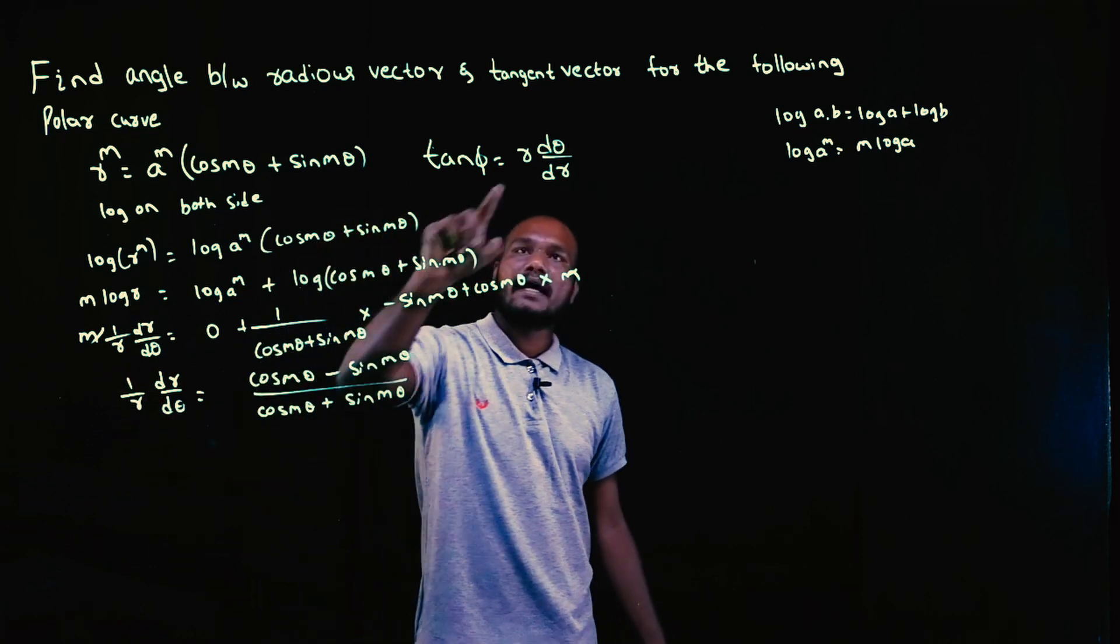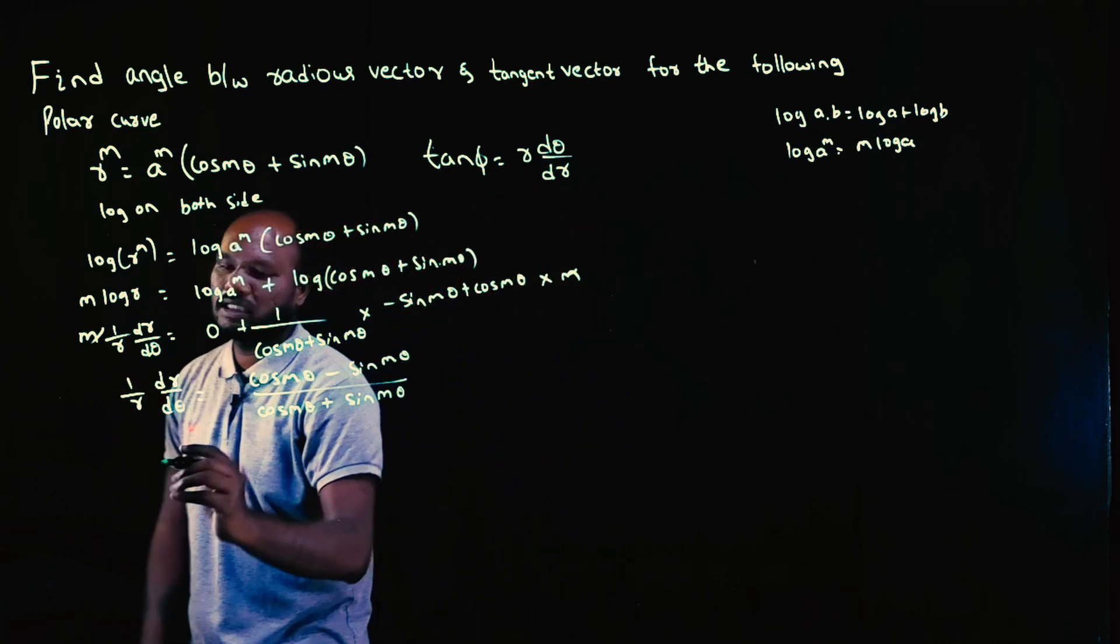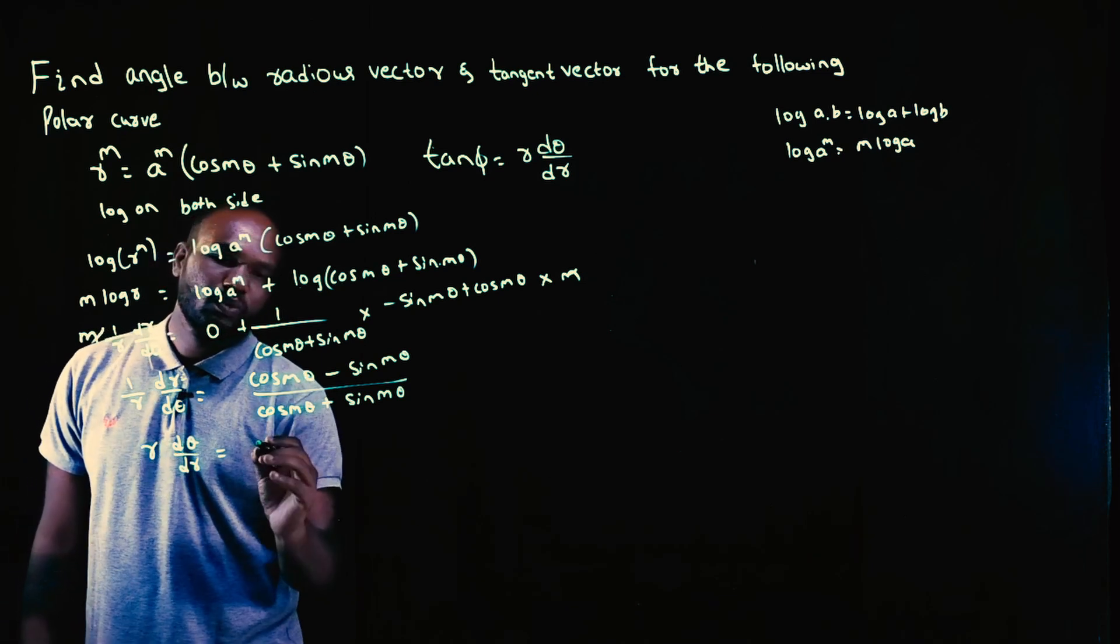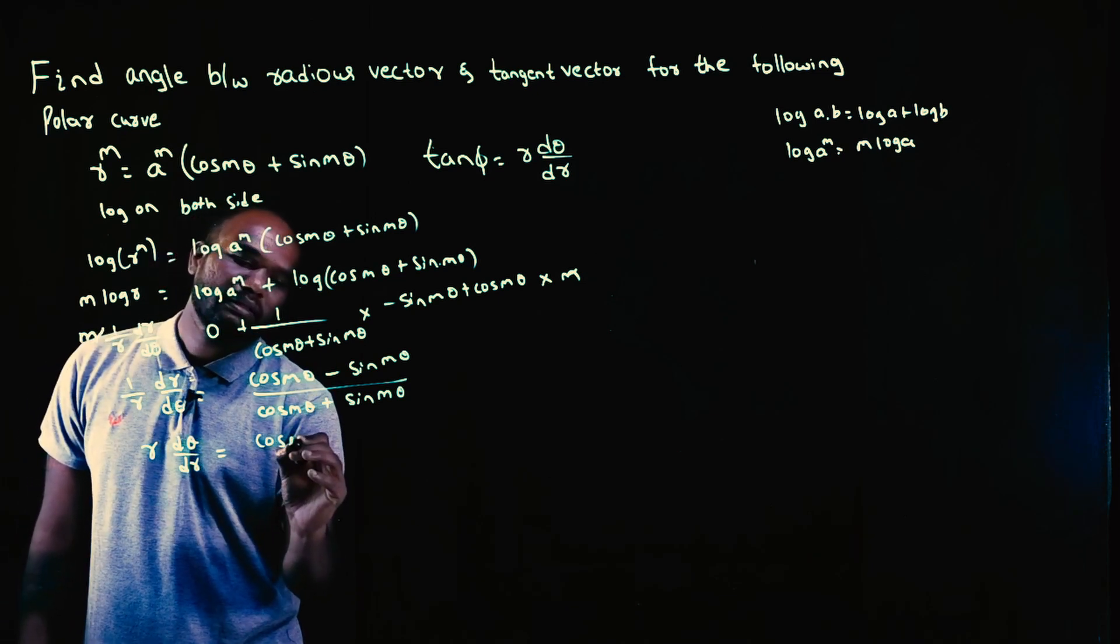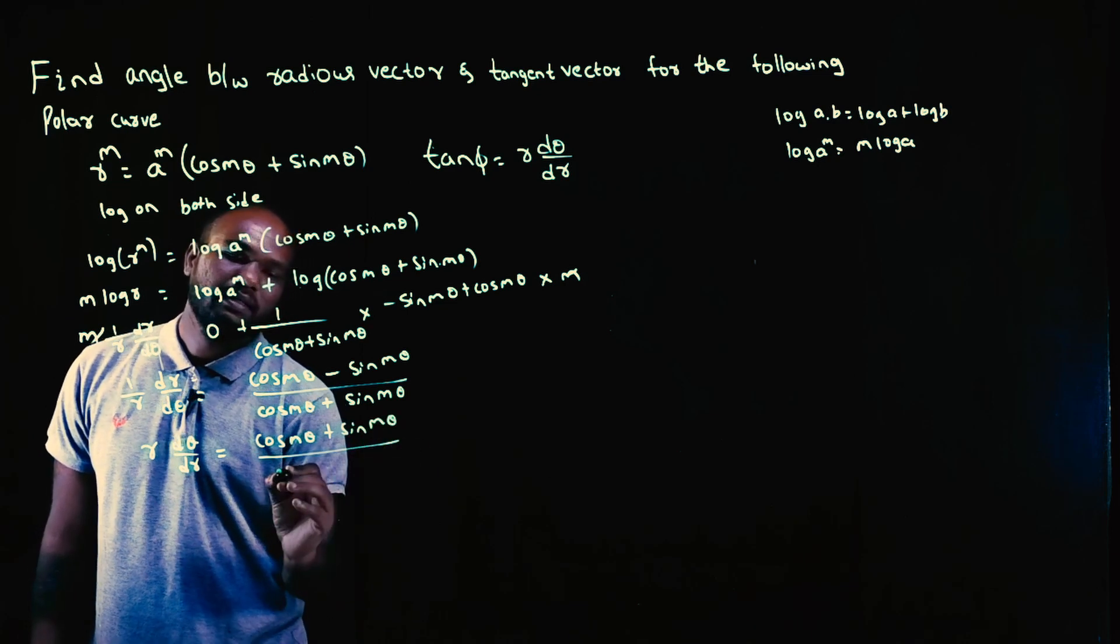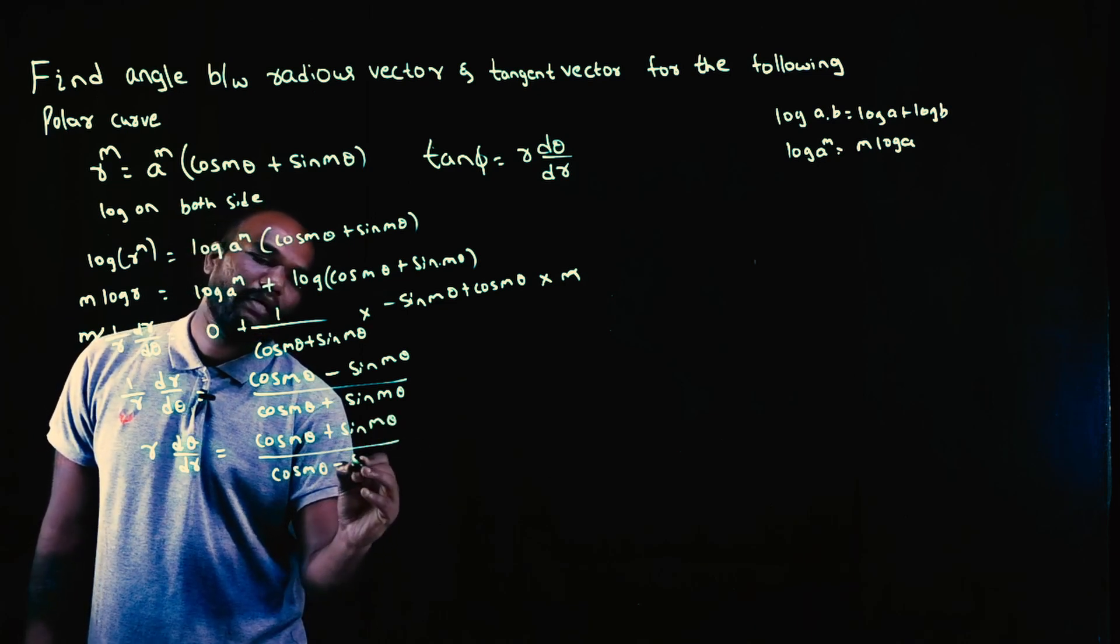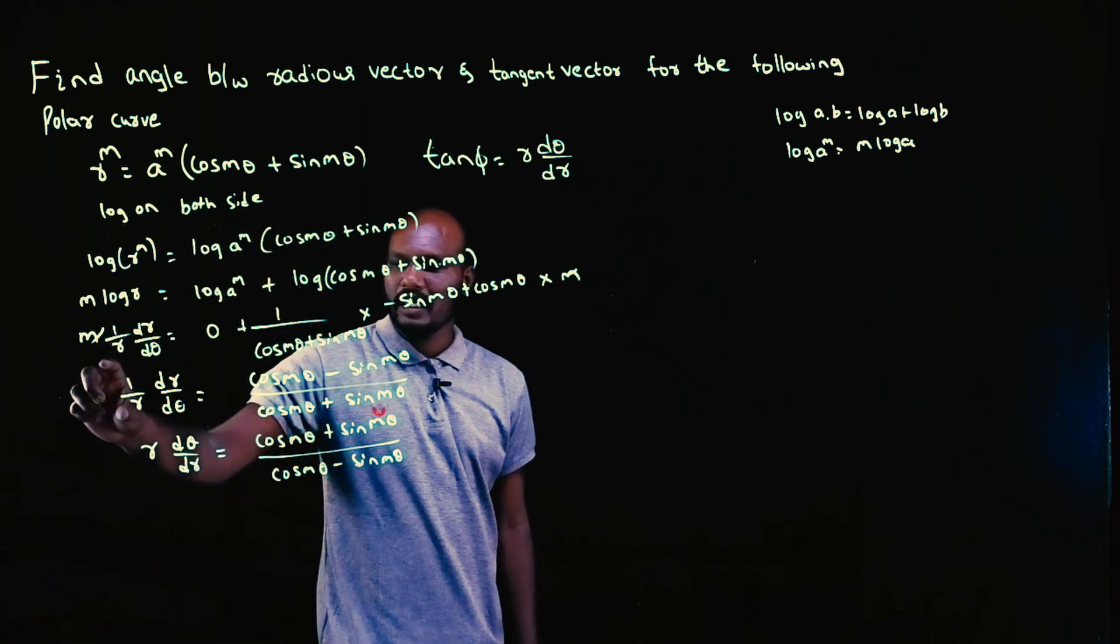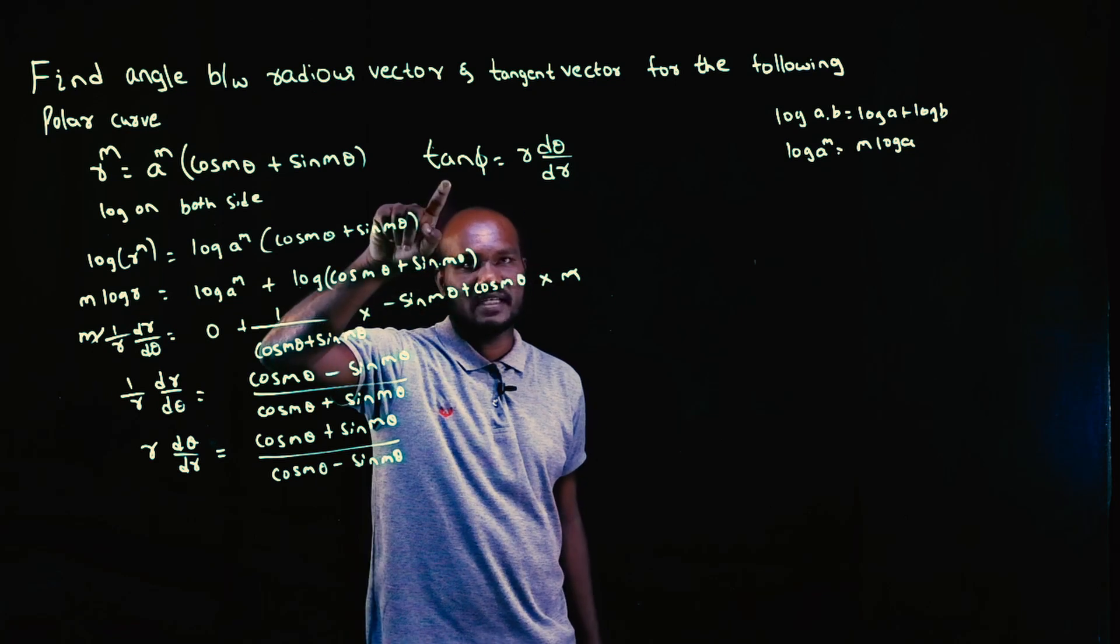So just reverse it. r times d theta/dr equals (cos m theta + sin m theta)/(cos m theta - sin m theta). Since r times d theta/dr equals tan phi...